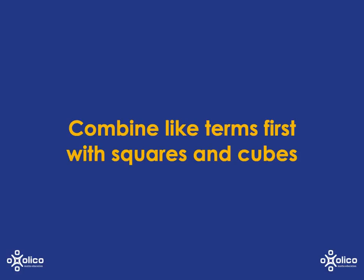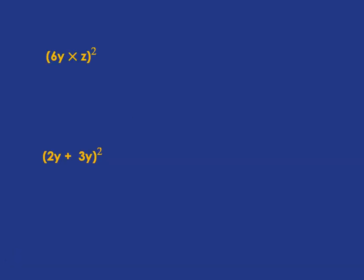We're going to have a look at squaring and cubing when we need to combine like terms first. Let's start off by looking at something like 6y multiplied by z, all squared.